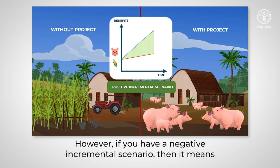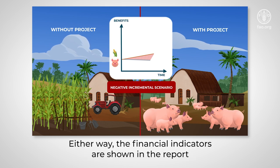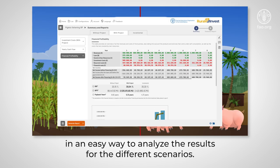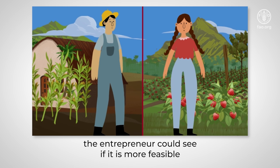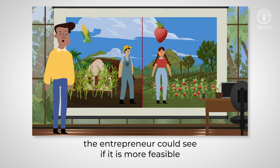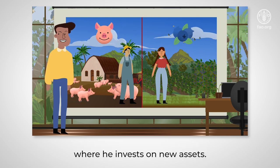However, if you have a negative incremental scenario, then it means that continuing with the business as usual is a better option. Either way, the financial indicators are shown in the report in an easy way to analyze the results for the different scenarios. With the incremental analysis, the entrepreneur could see if it is more feasible to continue his or her business as usual compared to a scenario where he invests in new assets.